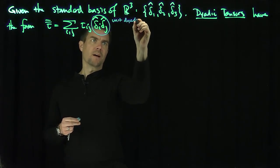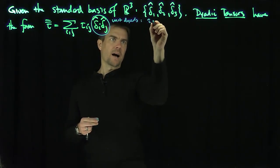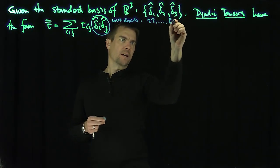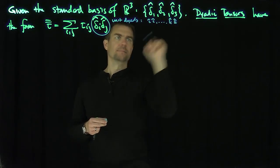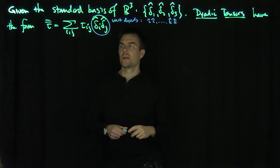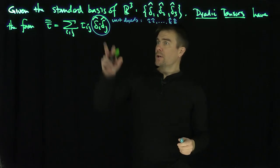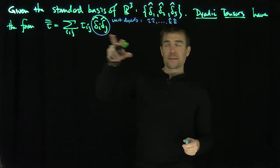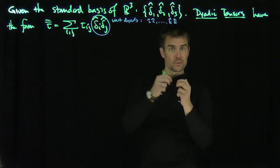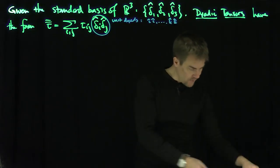There are nine of them, ranging from ii all the way down to kk. What we want to do now is use these unit dyads as a way to compute things in terms of cross products and dot products.